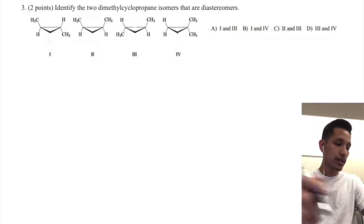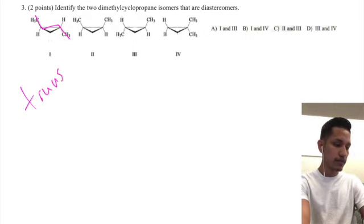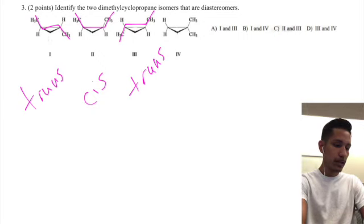So what we're going to do is we're going to figure out what type of configurations each of these compounds have. So one has the classic shape of a trans compound, two is cis, three is trans, and then four is neither.